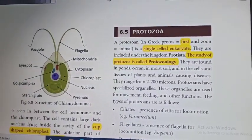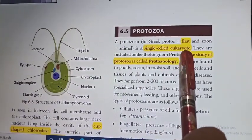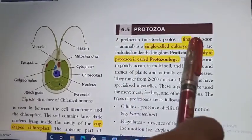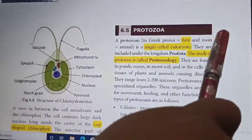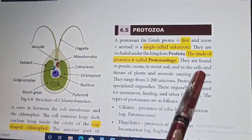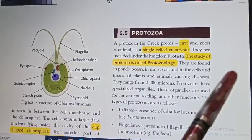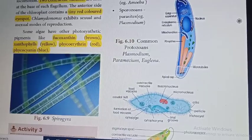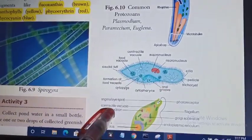Protozoa is a single cell eukaryote. Proto means first and zoa means animal, so protozoa means it is the first animal that exists in the marine environment. The study of protozoan is called protozoology. They are found only in moist oceans, ponds, and moist soil. Some examples of protozoan are plasmodium, paramecium, and euglena.